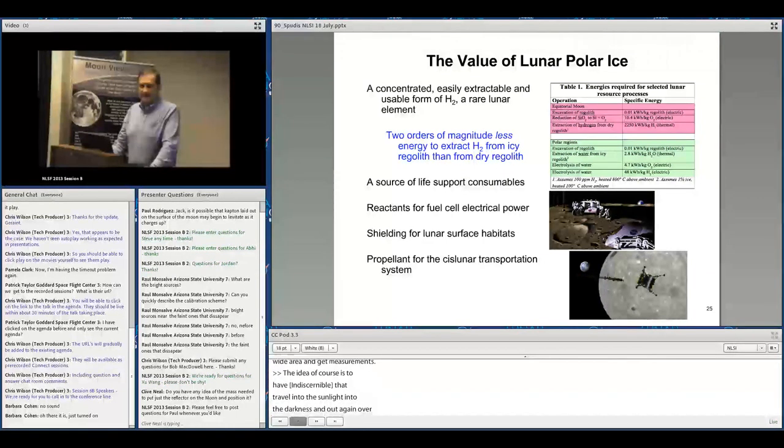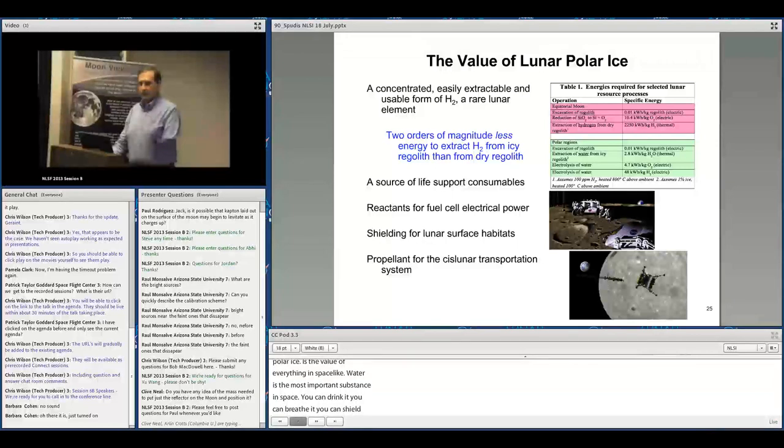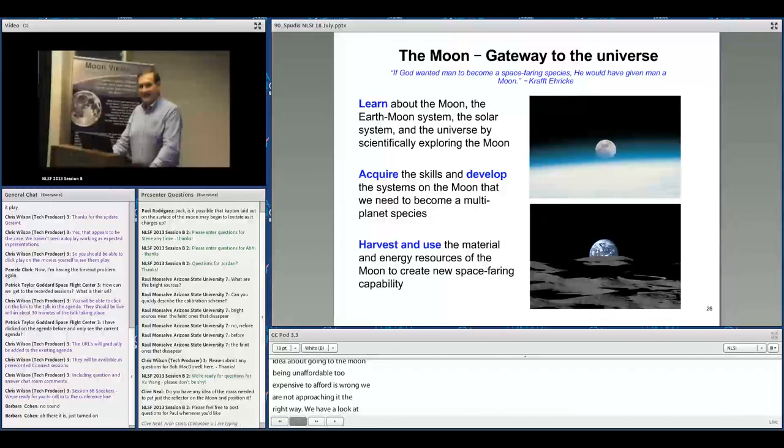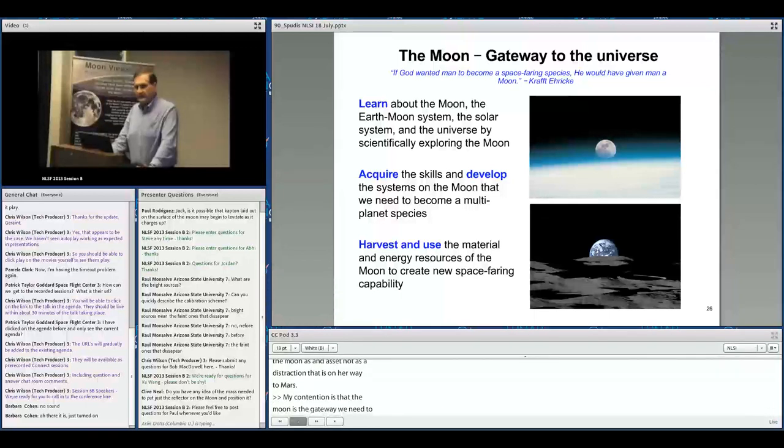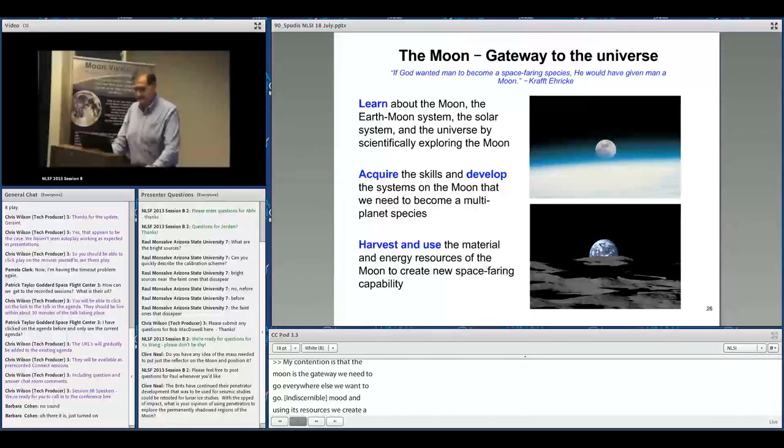What's the value of lunar polar ice? Its value is everything in spaceflight. Water is the most important substance in space—it supports human life, shields habitats from radiation, provides medium for energy storage with rechargeable fuel cells, and most importantly provides fuel for permanent space-based transportation. The Moon is an enabling asset. By using its resources, we create a system that allows us to go anywhere we want for as long as we want. That's the ultimate goal of spaceflight.